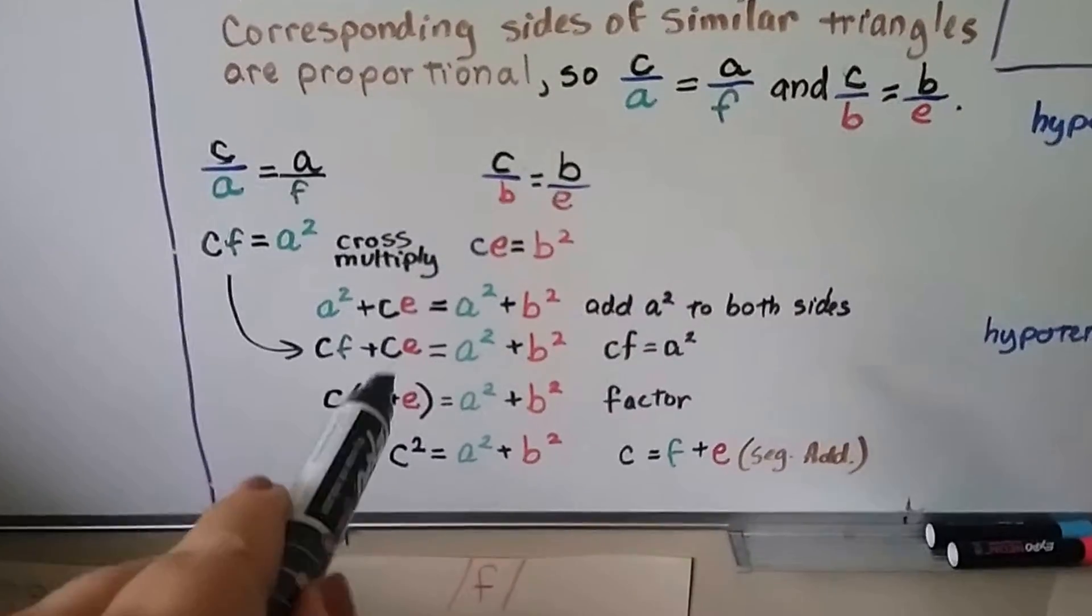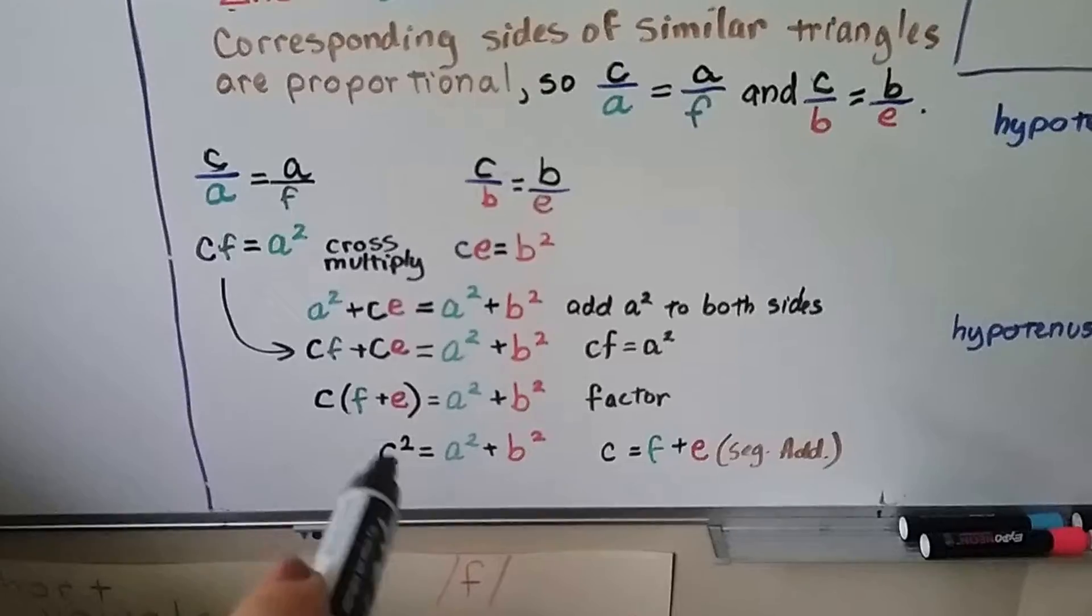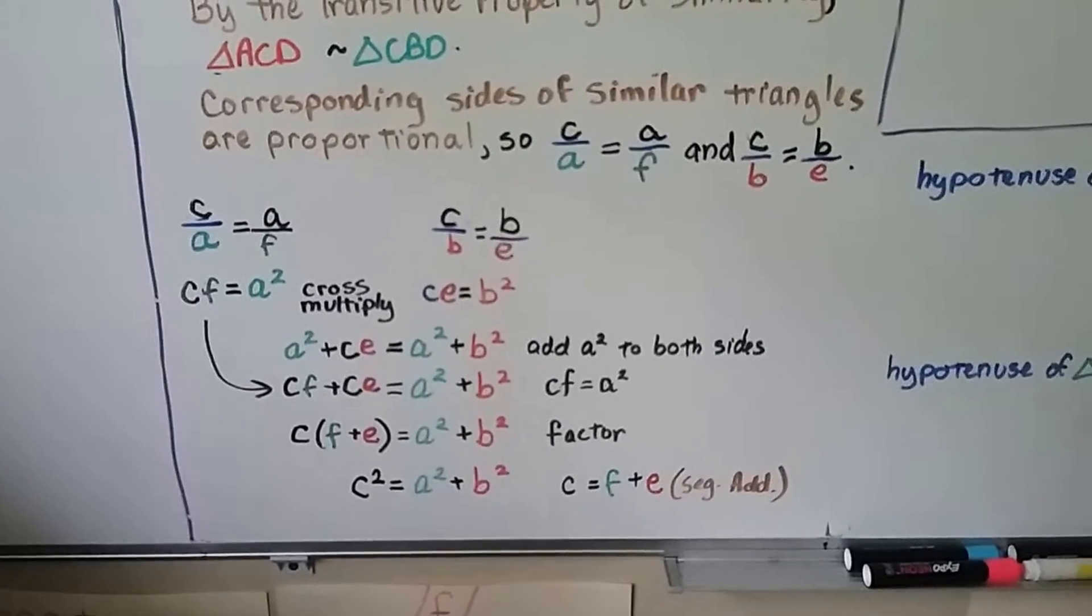So really what we've got is C times C, which is C squared. That's C squared. So we have C squared is equal to a squared plus b squared. That's the Pythagorean theorem.